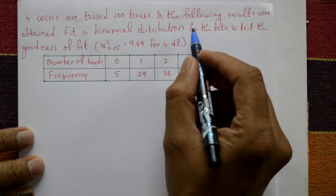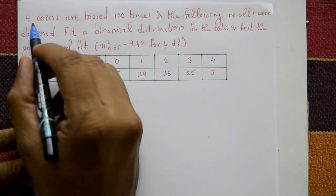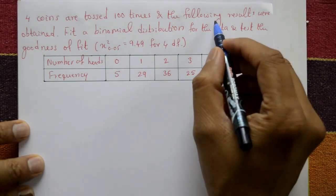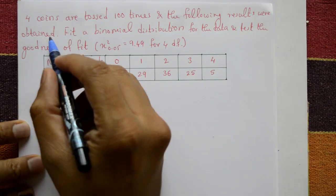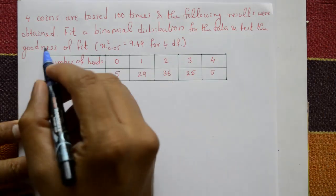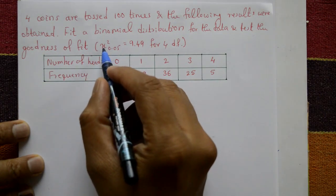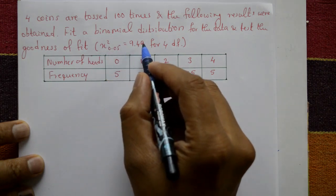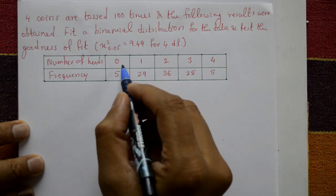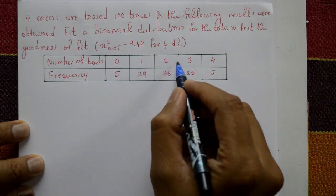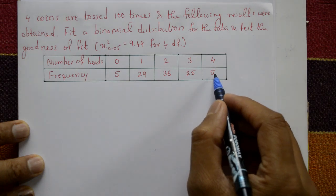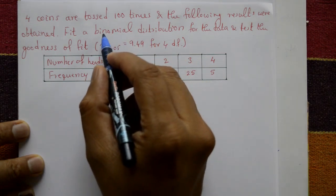This problem involves a chi-square distribution. Four coins are tossed 100 times and the following results were obtained. Fit a binomial distribution for the data and test the goodness of fit. Chi-square at 0.05 equals 9.49. The number of heads is 0, 1, 2, 3, 4 with frequencies 5, 29, 36, 25, and 5.